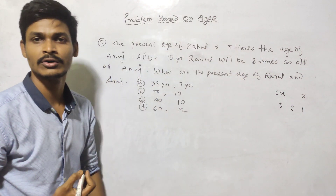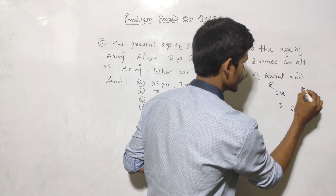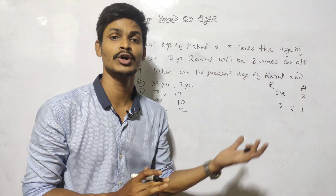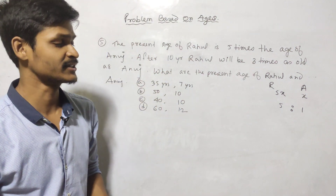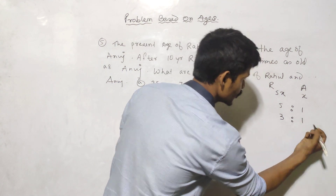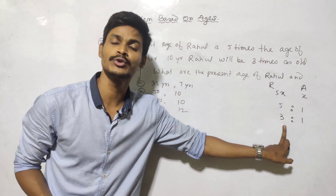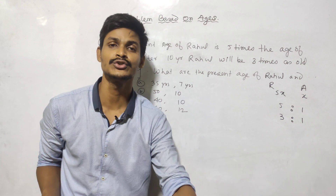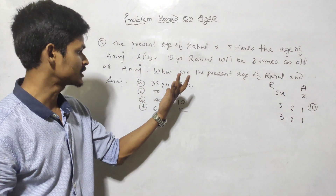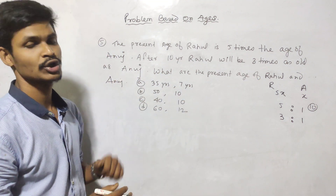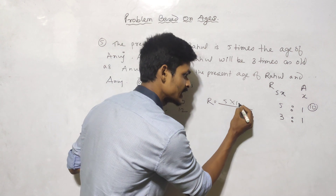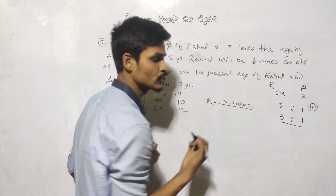The ratio of Rahul to Anuj is 5 to 1. After 10 years, Rahul will be 2 times as old as Anuj — the ratio becomes 3 to 1. So 3 minus 1 equals 2 for the final calculation.